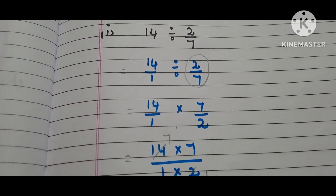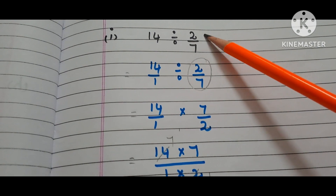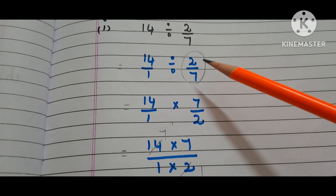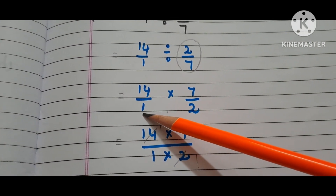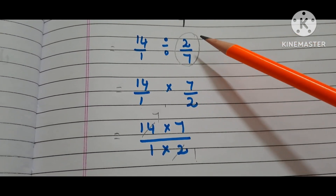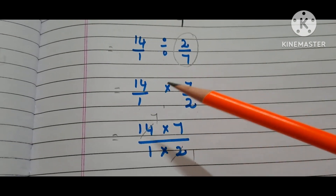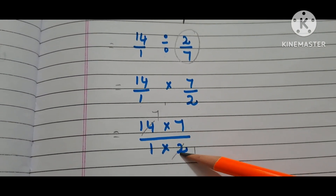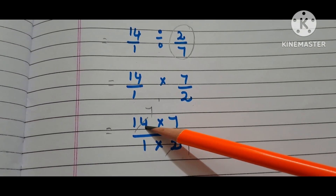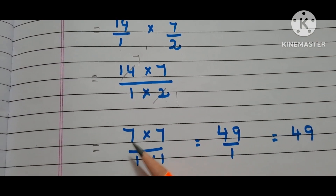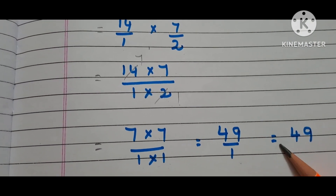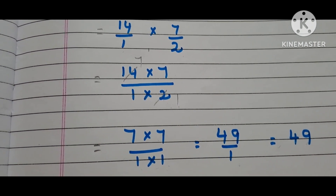Now let us move to the I bit. The question is 14 divided by 2/7. 14 is nothing but 14/1 divided by 2/7. Copy down the first fraction 14/1. Write the multiplication symbol instead of the division symbol and take the reciprocal of 2/7, that is 7/2. We have 14 times 7 by 1 times 2. Here we can reduce 2 and 14: 2 times 1 is 2, 2 times 7 is 14. Now we have 7 times 7 by 1 times 1, that is 49/1, which equals 49. The answer is 49.